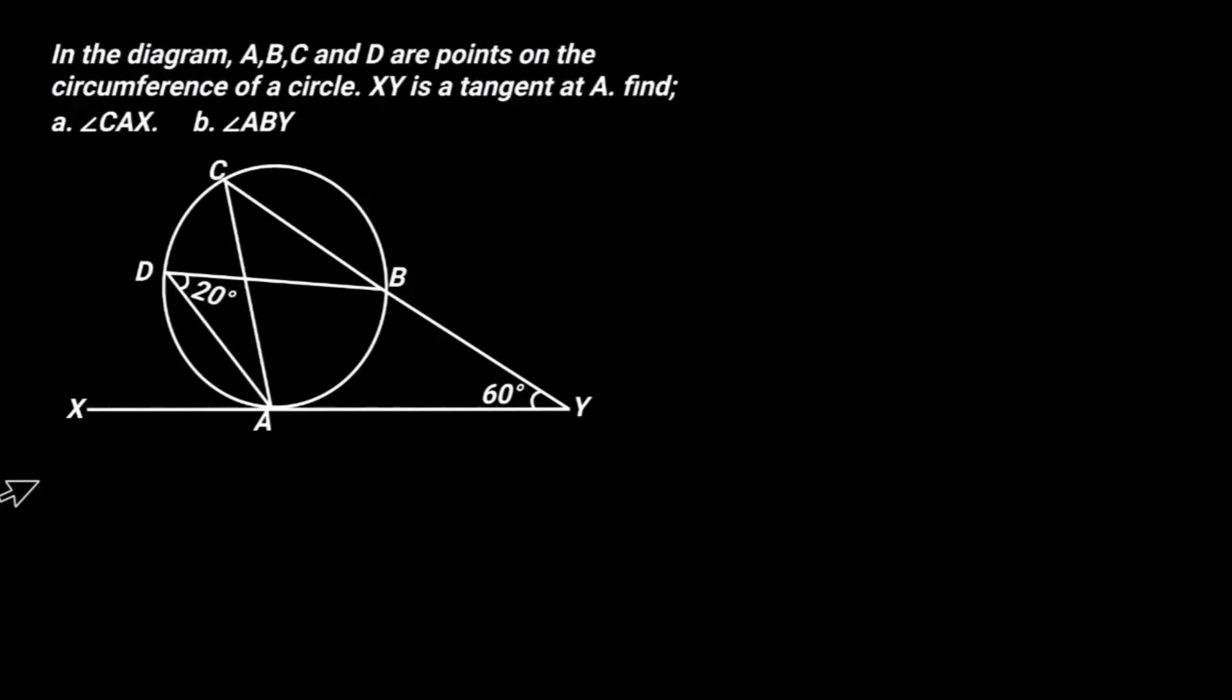In the diagram, ABC and D are points on the circumference of a circle. XY is a tangent at point A. Find: A, angle CAX, and B, angle ABY.